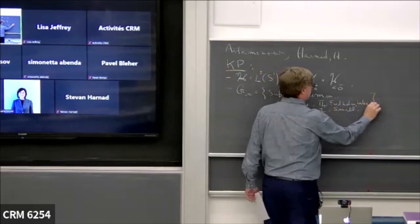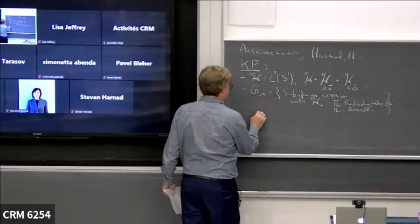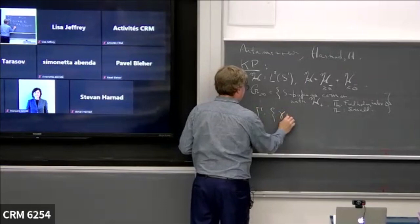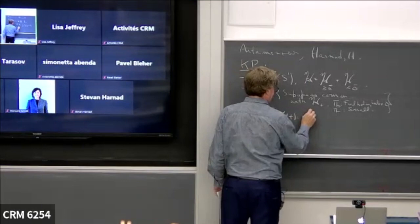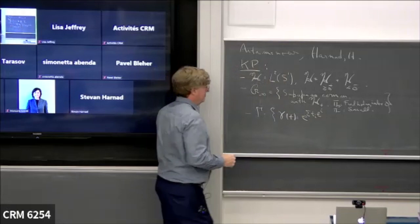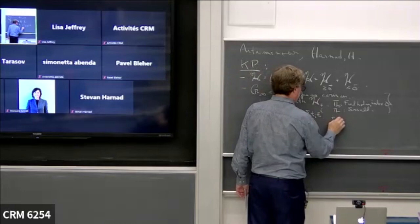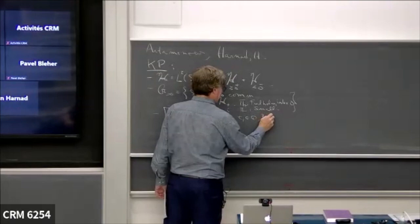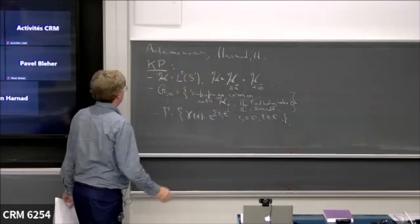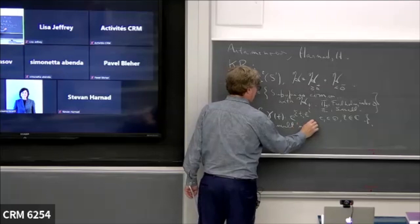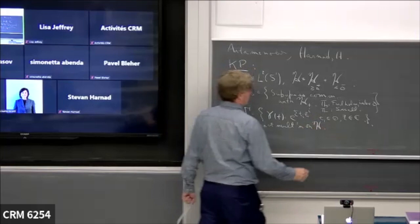I'll fix the Fredholm index to be zero, and π_minus will be Hilbert-Schmidt or trace class. The other actor in this game is a group Γ, which is an infinite-dimensional abelian group. It is the set of exponential quantities: the exponential of some Σ t_i z^i, where the t_i are parameters belonging to ℂ and z belongs to ℂ.